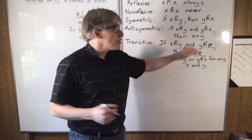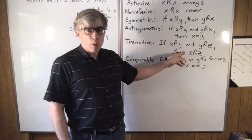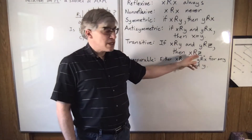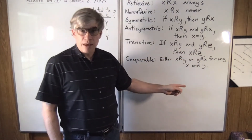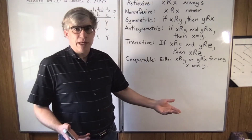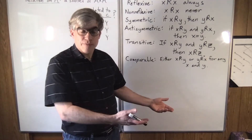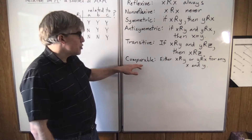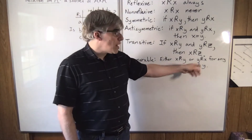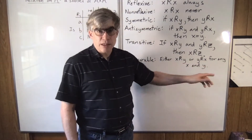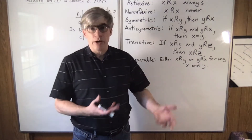You have to have some sort of equals defined — maybe it's just identity. Transitive: if x is related to y and y is related to z, then x is related to z. Every interesting relation has that property of being transitive. Comparable: either x is related to y or y is related to x for any x and y — you can always compare x and y.